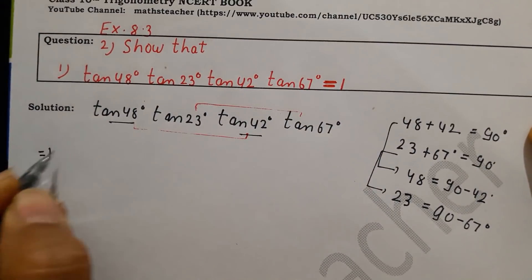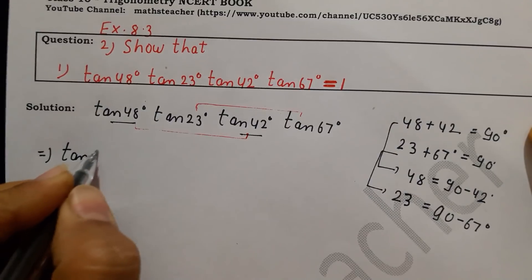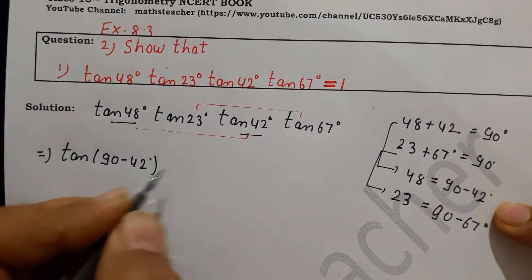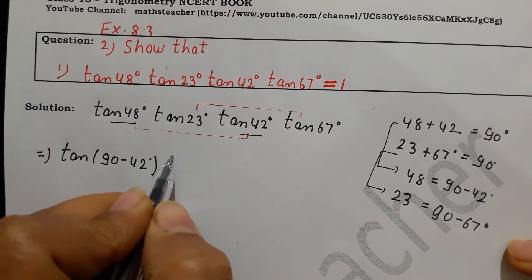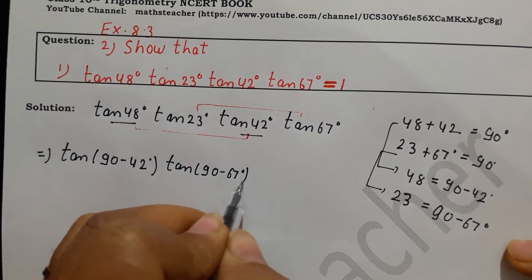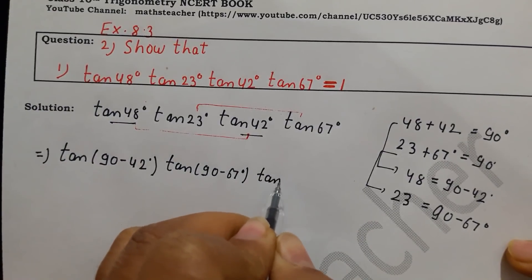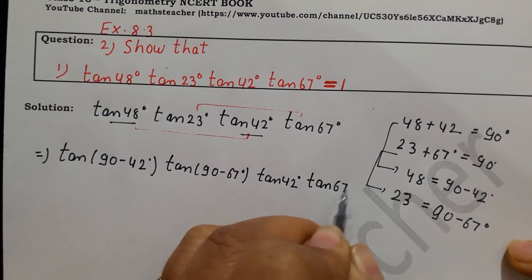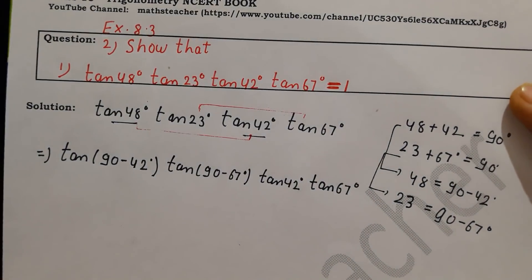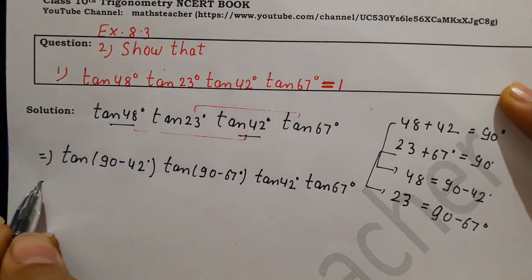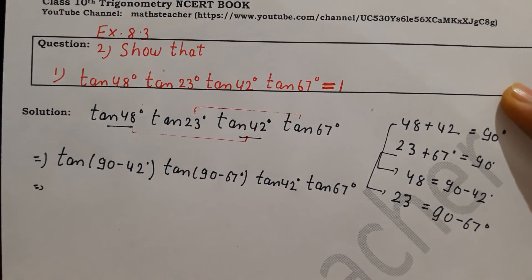So we have to put this value in 48 and 23. Now we will put the value: in place of tan 48° we put tan(90 minus 42°), and in place of tan 23° we put tan(90 minus 67°). The remaining two are kept as they are. Many children make the mistake of changing both angles in a pair — we only change one.